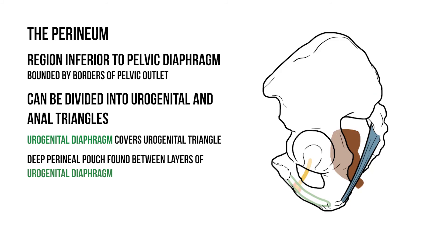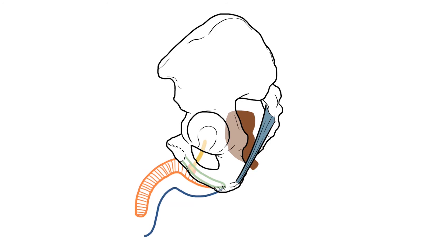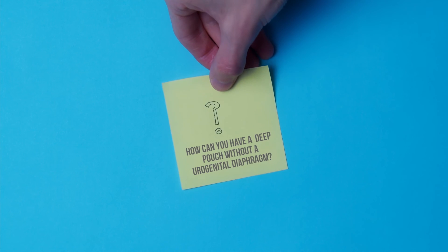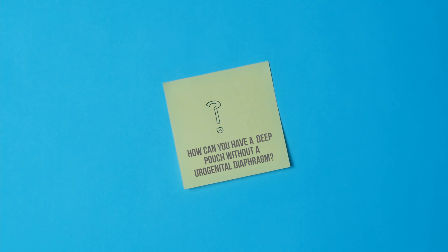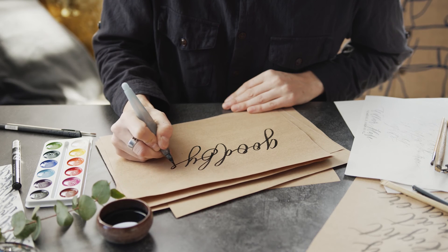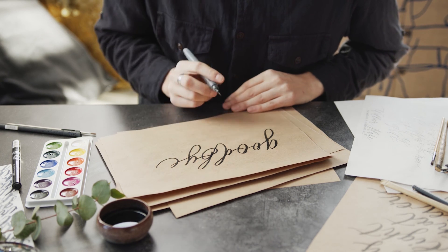So that's the urogenital diaphragm and the deep perineal pouch. In the next video I'm going to add the external genitalia. But until then if you have any questions please just get in touch. Other than that thank you for watching and I'll hopefully see you again soon. Cheers.